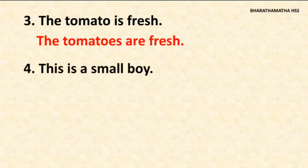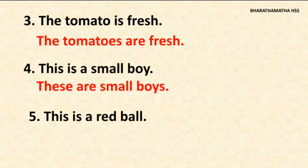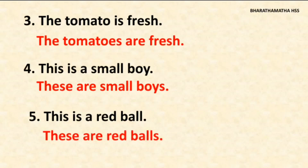Next one is: this is a small boy. The plural form of this is these, and is becomes are, and small boy will become small boys — these are small boys. Next one: this is a red ball. This will become these, is will become are, and a red ball will become red balls — these are red balls.